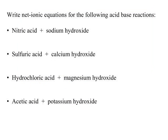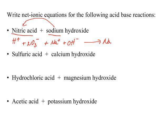Let's use these rules and practice some net ionic equations. First, classify your acid and your base. You've got nitric acid, which is a strong acid, so you would ionize it. You would also ionize sodium hydroxide because it is a strong base. Your products are salt and water — the salt this time being sodium nitrate, which is a soluble salt. Write your sodium and nitrate ions, and then water in molecular form. Your spectator ions are the nitrate ion and the sodium ion, and your net ionic equation is H+ + OH- → H2O.